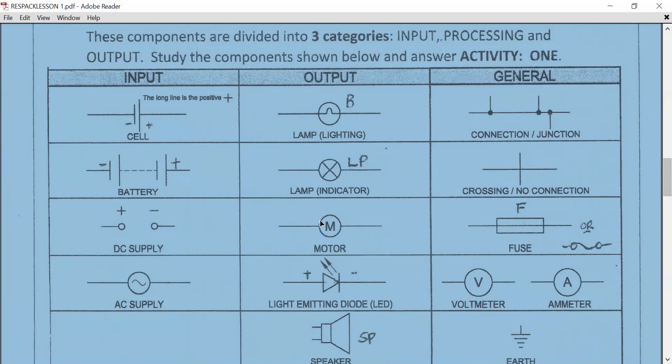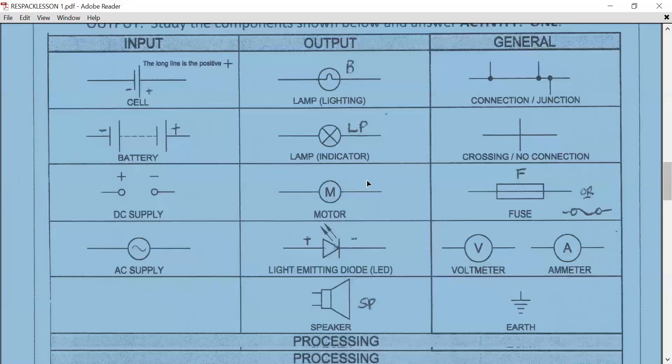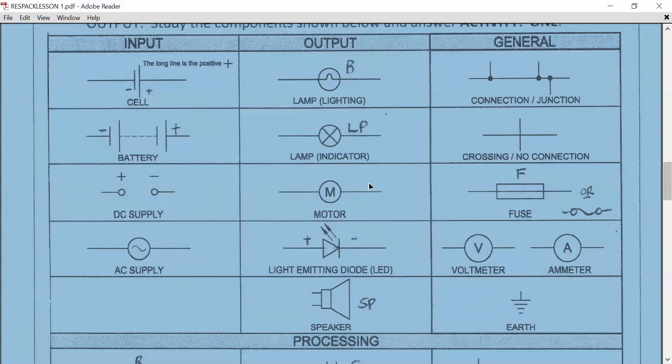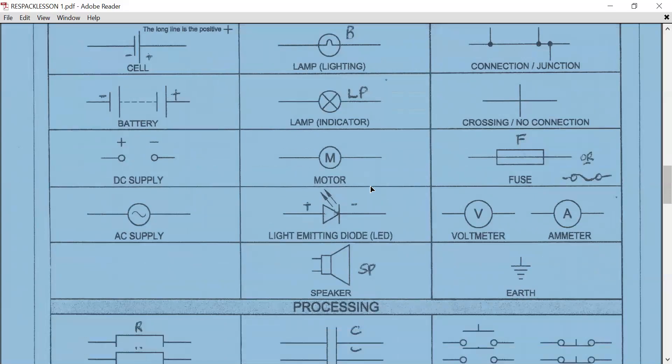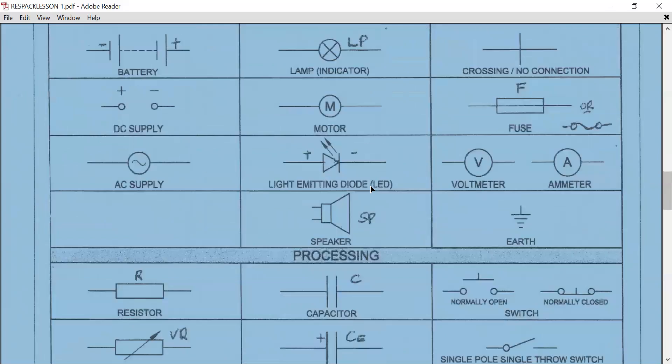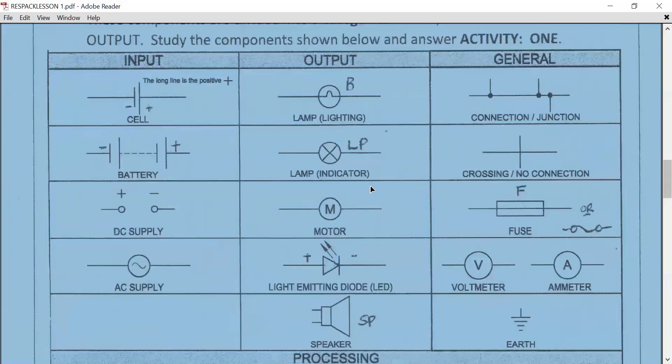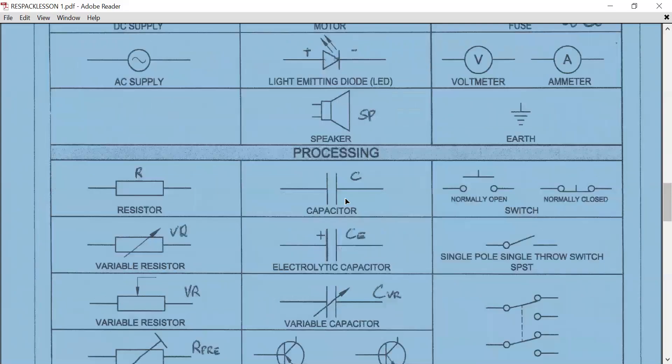General stuff will be like circuit diagrams, crossing, and fuses. I did put another symbol there - you can use either of the two fuses. So we covered input, the process, the output, and general. Let's go to processing now. All these components at the bottom there are your processing components.